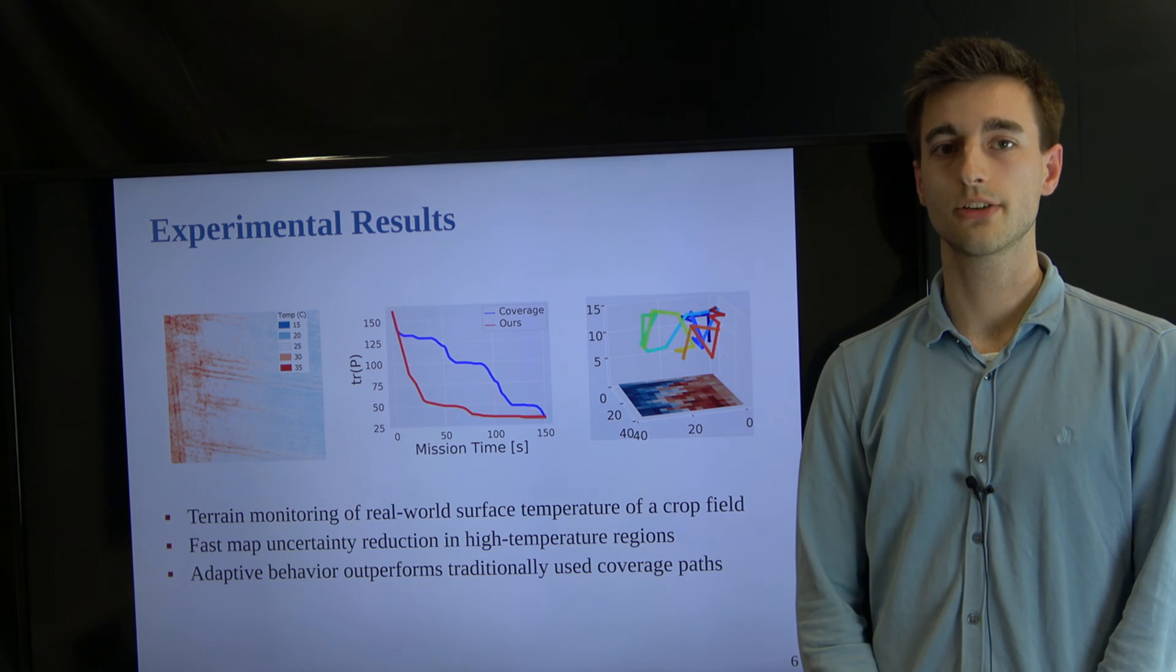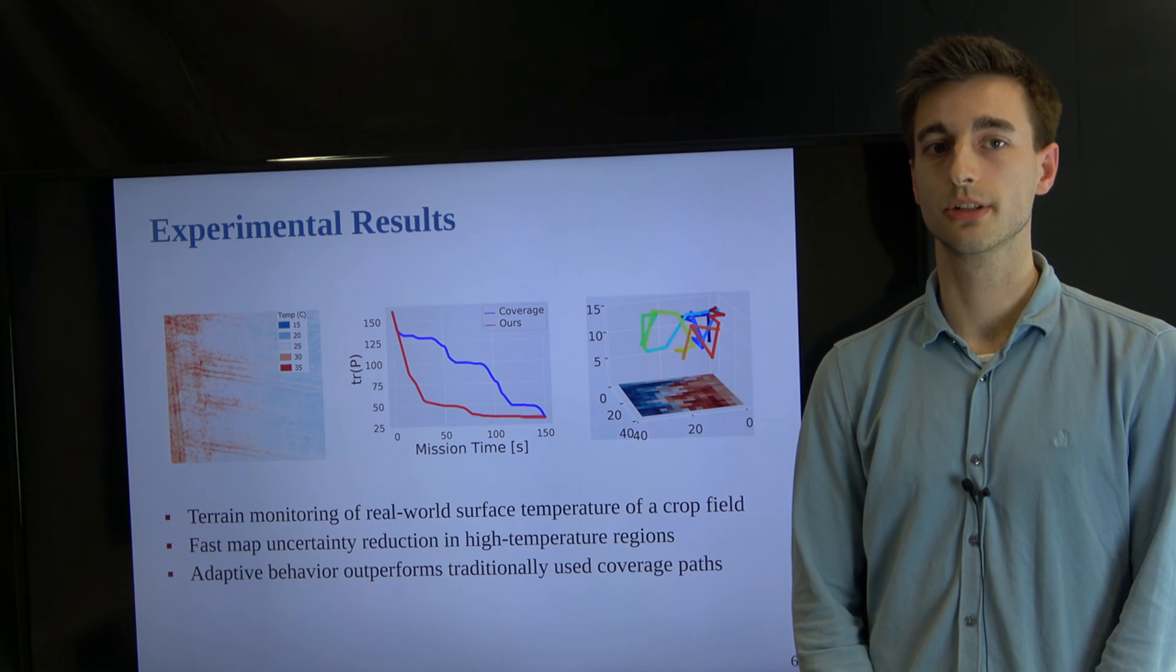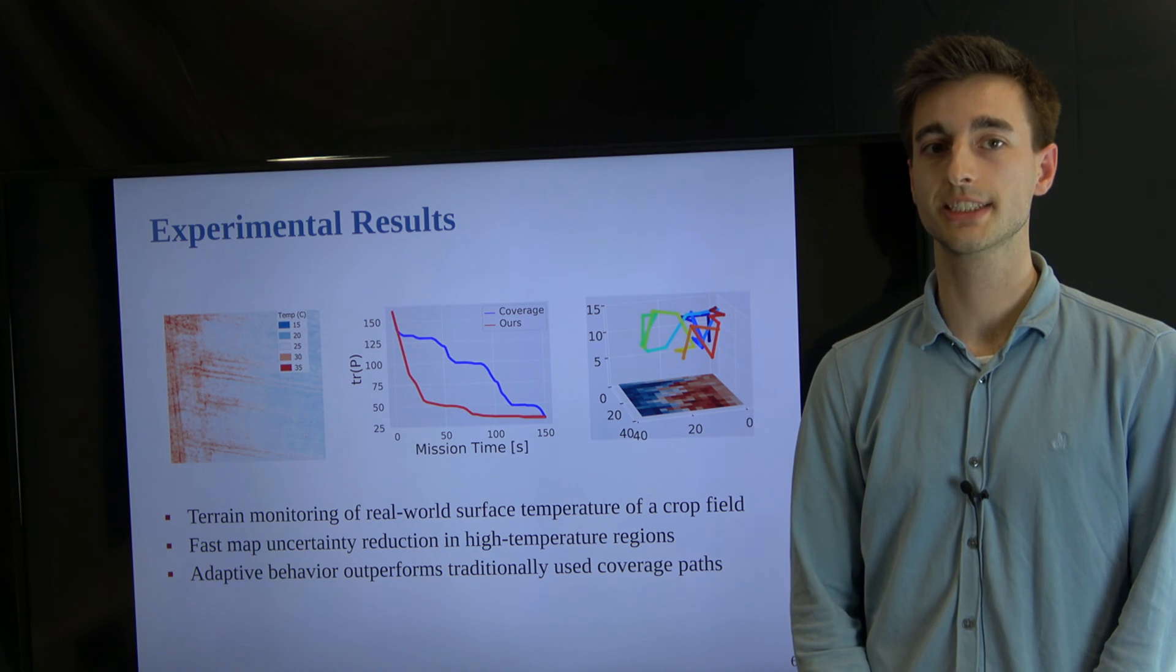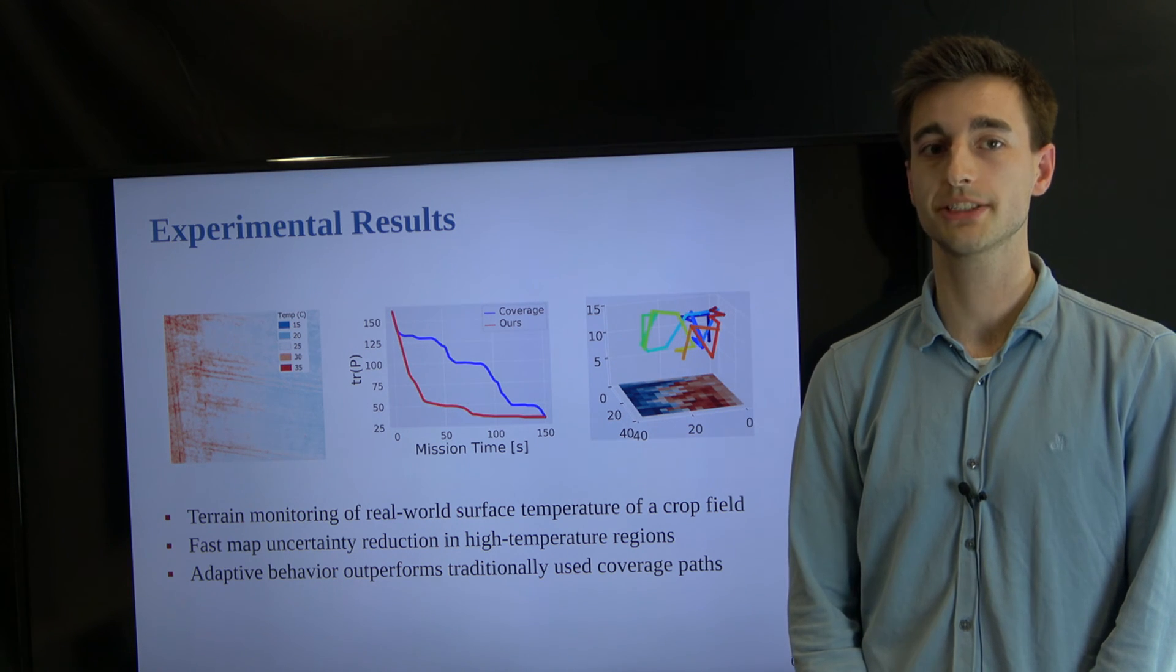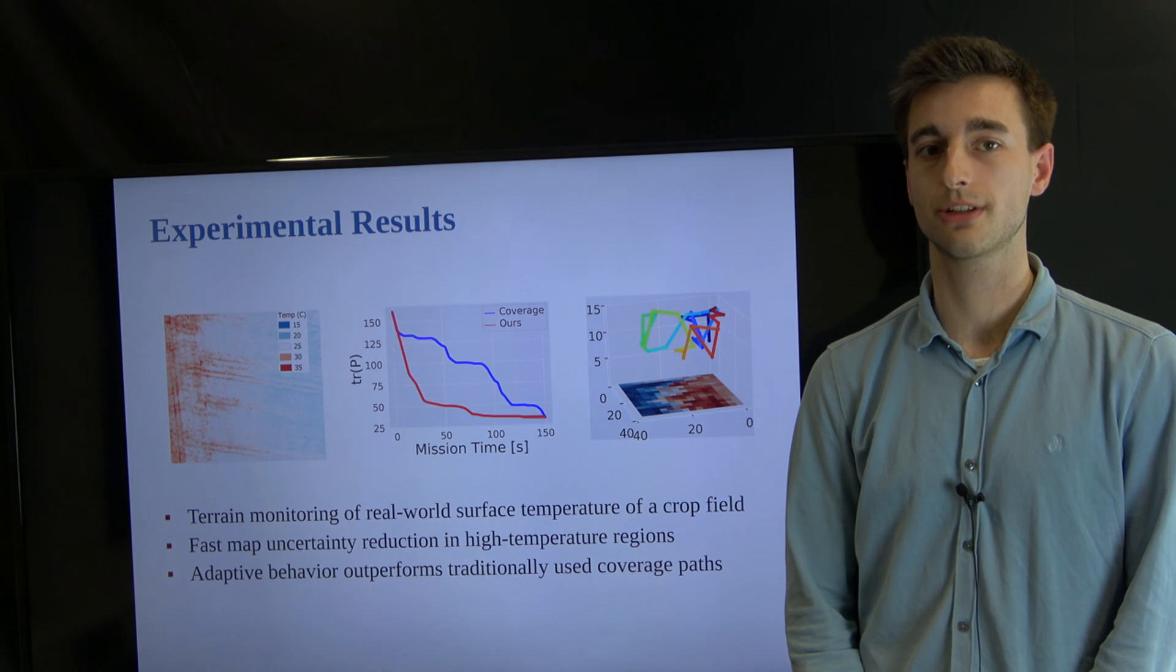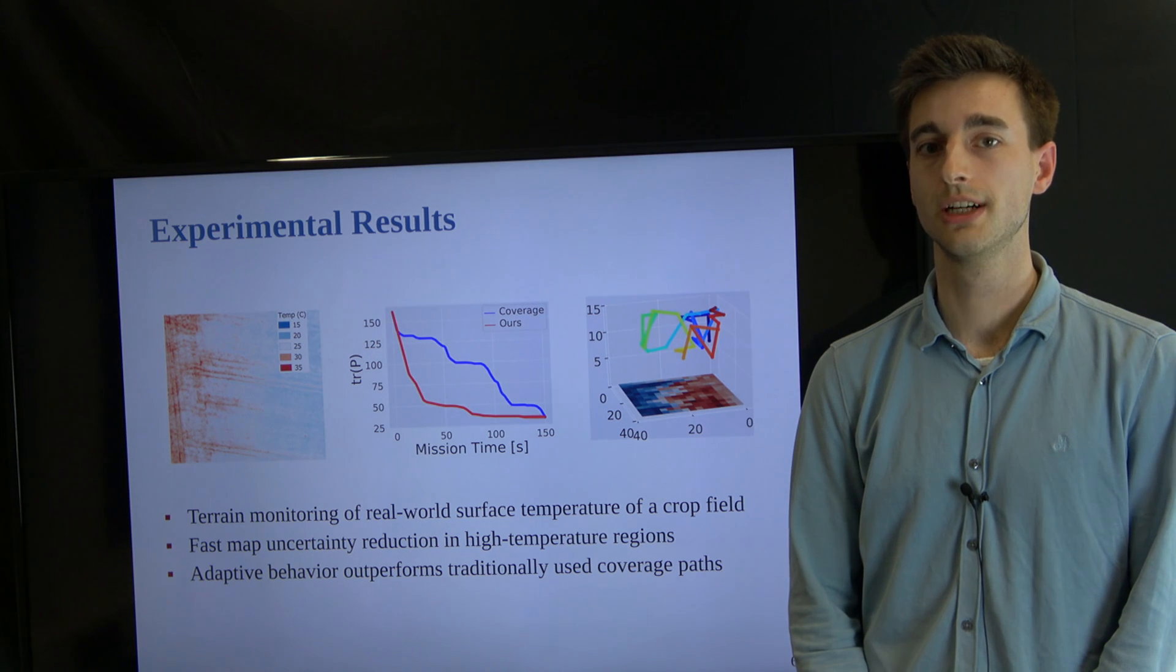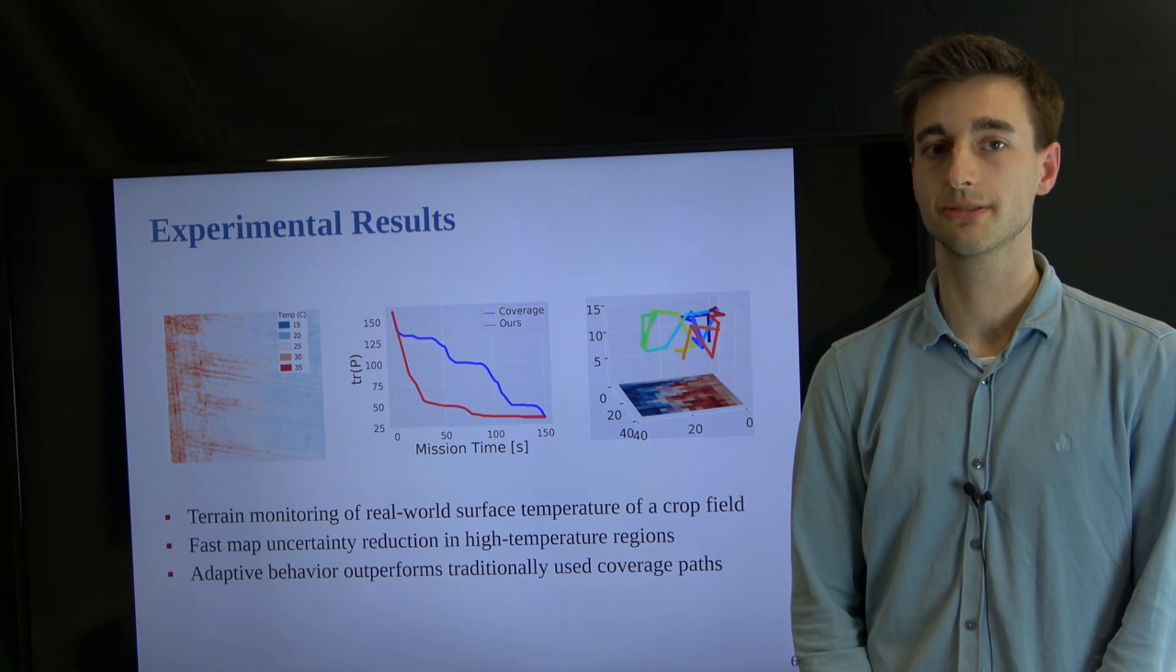Last, we evaluate our approach on real-world surface temperature data of a crop field near Bonn. Our reinforcement learning approach, trained on synthetic simulated data, ensures fast map uncertainty reduction in high-temperature regions outperforming traditionally used coverage paths, showcasing a successful integration of our framework for UAV-based monitoring scenarios.